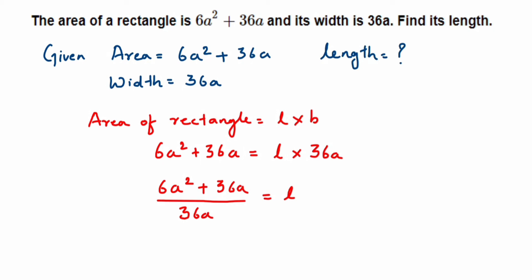So how can we factorize? I cannot apply any identities, so we're going to just take the common factor. So the common factor is this: 36 can be written as 6 into 6.